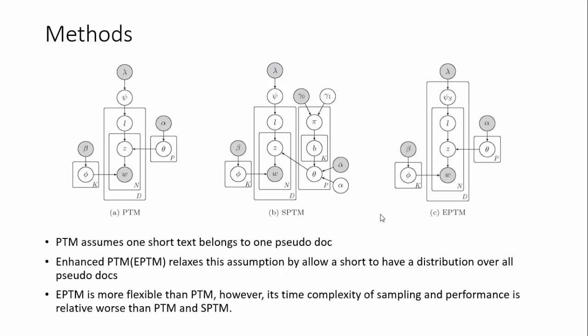For extension, since PTM assumes one short text belongs to one pseudo document, ePTM relaxes this assumption by allowing a short text to have a distribution over all pseudo documents. Therefore, ePTM is more flexible than PTM. However, its time complexity of sampling and performance is relatively worse than PTM and SPTM.